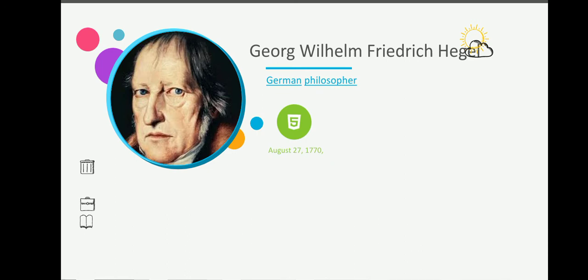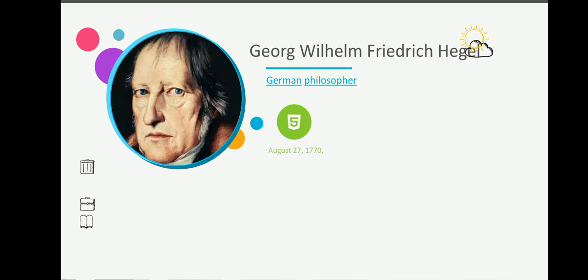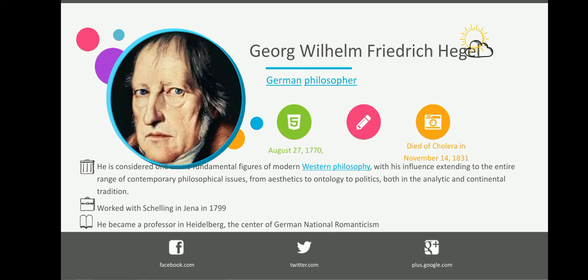Our second philosopher is none other than Georg Wilhelm Friedrich Hegel, also a German philosopher. He is considered one of the fundamental figures of modern Western philosophy, with his influence extending to the entire range of contemporary philosophical issues from aesthetics to ontology to politics, both in analytic and continental tradition. He worked with Schelling in Jena in 1799 and became a professor at Heidelberg, the center of German national romanticism. Born in August 27, 1770, and died of cholera in November 4, 1831.